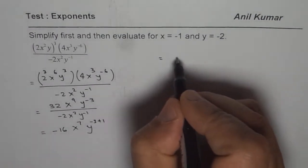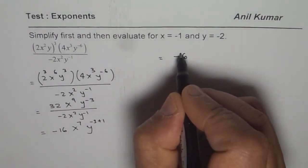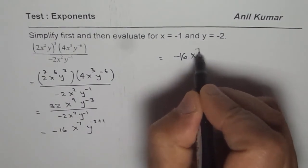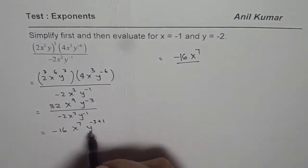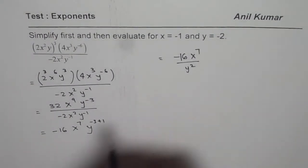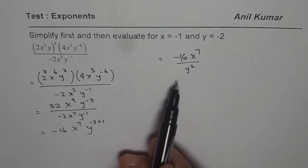So this could be written as minus 16 x to the power of 7 and y to the power of 2. Since this is minus 2, so I am bringing it down.